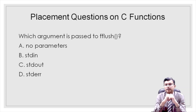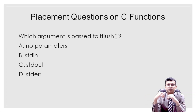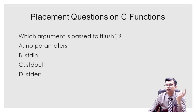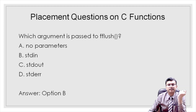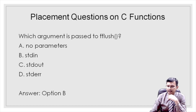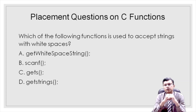Question two: which argument is passed to `fflush`? The options are no parameters, stdin, stdout, or stderr. The answer is stdin. `fflush` is a library function often used in programs with structures involving many inputs, and `fflush(stdin)` is used to clear the input buffer.